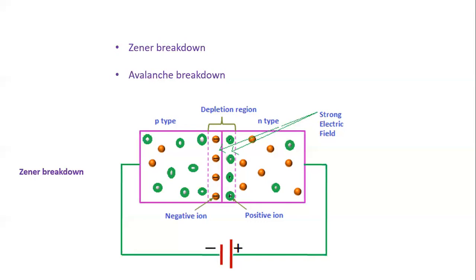In the case of Zener breakdown, the material is prepared with high doping, meaning the p-type and n-type materials are heavily doped. When it is heavily doped, the depletion region becomes very thin. In the p-type material, holes will be more in concentration, and similarly the n-type material will have a high concentration of electrons.